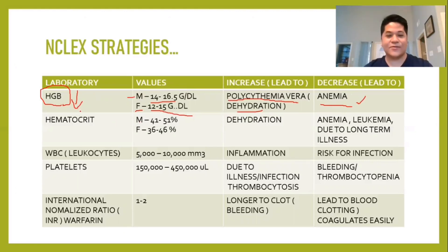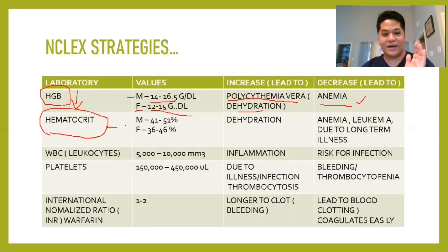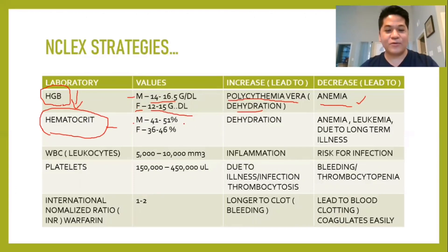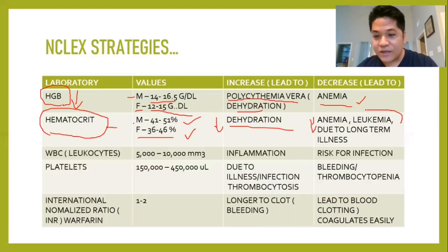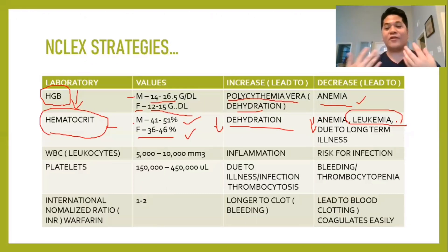Next is hematocrit, which is the portion of blood made up of red blood cells. For males, the normal value is 41 to 51%, and for females it's 36 to 46%. If hematocrit decreases, it can indicate dehydration or anemia. It can also decrease due to leukemia from long-term illness, where the bone marrow keeps producing red blood cells that are not functional.